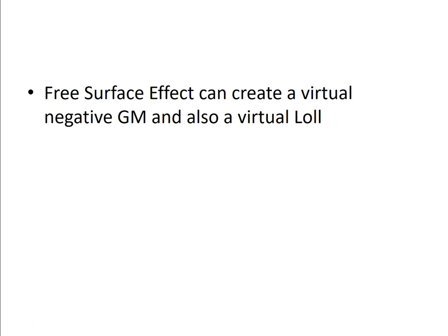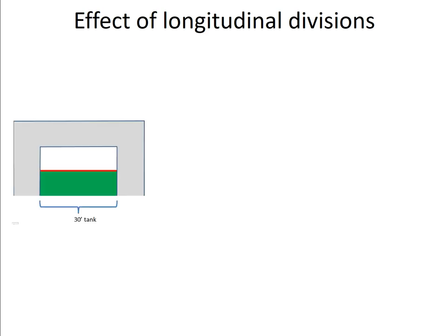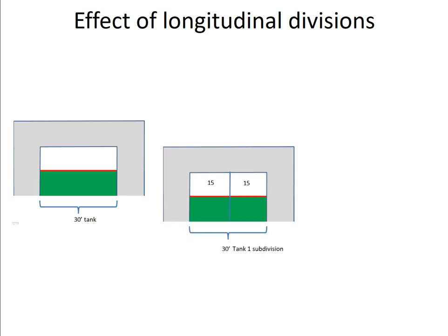This free surface effect can create negative GM and also virtual LOL. In your book, you should read page 162 — these are all important things about the GGO formula and the variables associated with R times L times B cubed. Now, what happens if I have some tanks and start to put longitudinal divisions in them? Here's a 30-foot tank. If I took that tank and put one longitudinal division down the center, that 30-foot tank would be divided into two 15-foot halves.